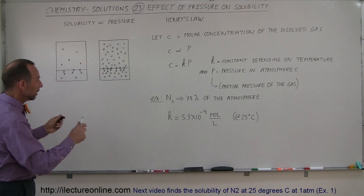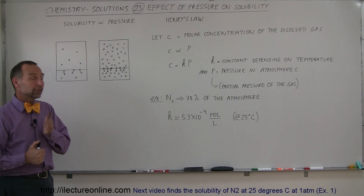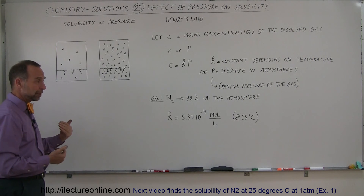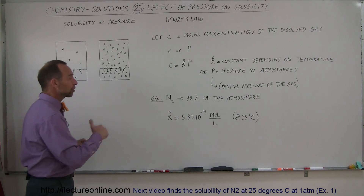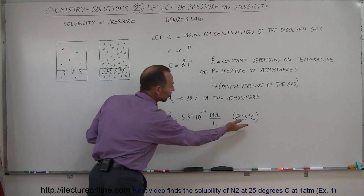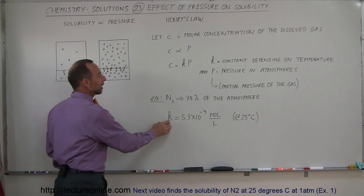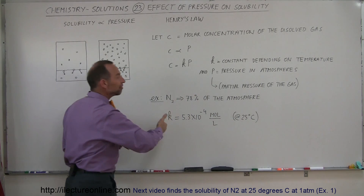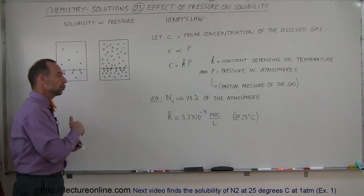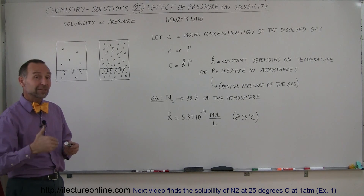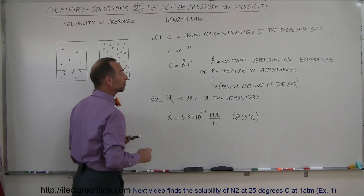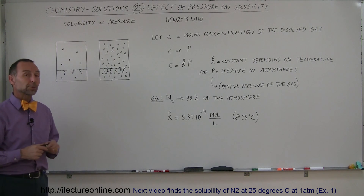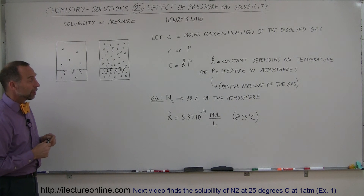That gives you a pretty good idea of how solubility depends on pressure. Basically, it's directly proportional: double the pressure, double the solubility; triple the pressure, triple the solubility. The constant K is usually set at 25 degrees Celsius, and it tells us how many moles of the gas will dissolve per liter at that temperature if the partial pressure of the gas is 1 atmosphere. If the partial pressure is less than 1 atmosphere, we have to account for that in our equations. I'll show you a couple of examples to get more familiar with how to apply this idea to solubility.